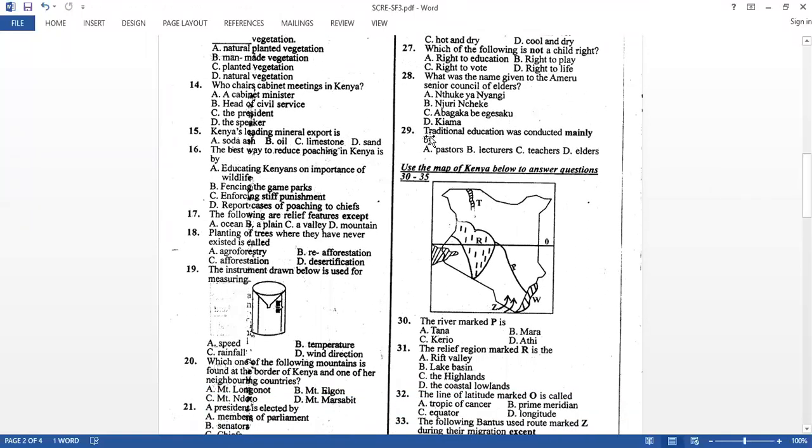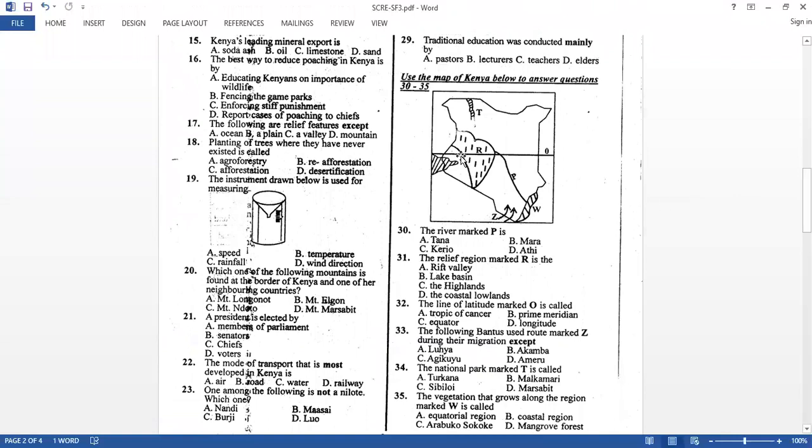Traditional education was conducted mainly by pastors, lecturers, teachers, or elders. So remember in the past the children were mainly taught by their elders. Then to our last question. So this is our map. This line here is what's called the equator. This is Lake Turkana which is here, Lake Victoria, the Indian Ocean. Then the language group which follows this route here also. These are some of the questions I can find being asked as far as this question is concerned. Number 30, the river marked P. So this is the river, the longest river in Kenya that maybe has its source from Mount Kenya draining this water into the Indian Ocean. And all of you know the longest river in Kenya is River Tana.